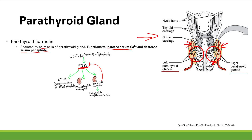PTH also acts directly on the kidneys to increase calcium reabsorption from the urine and decrease phosphate reabsorption, increasing secretion of phosphate. So you're going to retain calcium and excrete phosphate. It's also going to act on the kidney to increase vitamin D activation — that's where vitamin D is activated — so you get more vitamin D thanks to PTH.